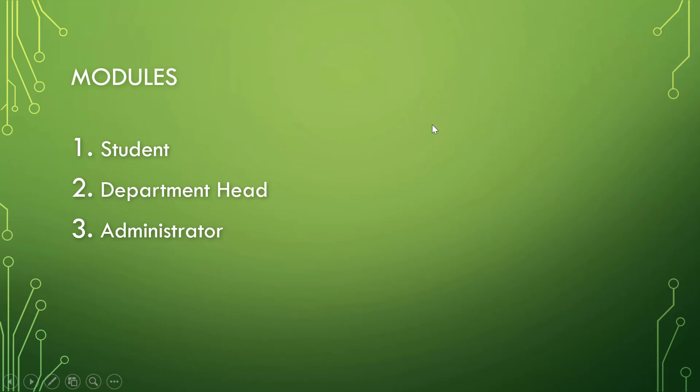Now let's see the list of modules in our project. We have three modules: the first module is Student, in which a student can log in and raise complaints. The second is Department Head, who takes care of viewing and solving complaints. The third is Administrator, who adds all the students and departments, and is also capable of solving and viewing complaints.